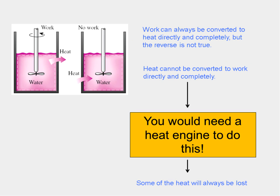Here we have water and a shaft. We apply work onto the system, the shaft rotates, and heat can be produced. Conversely, if I add heat to that water, I can get more work out of it. This shows how work can always be converted to heat directly and sometimes completely, but the reverse is not true. Heat cannot be converted to work directly and completely — it does not occur naturally. In order to convert heat to work, you need what's called a heat engine.